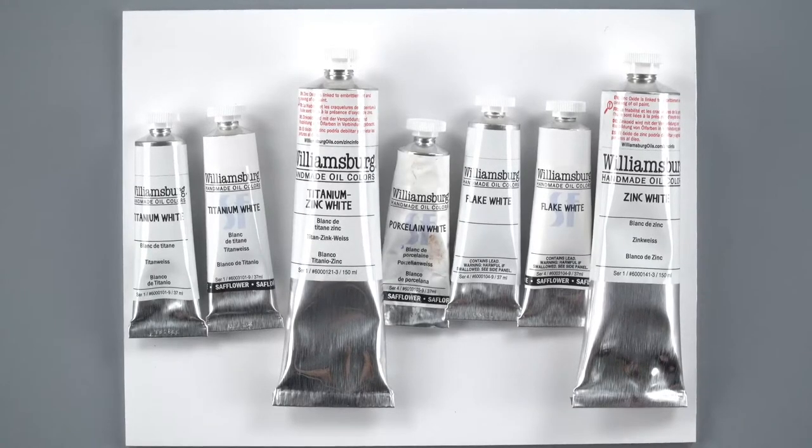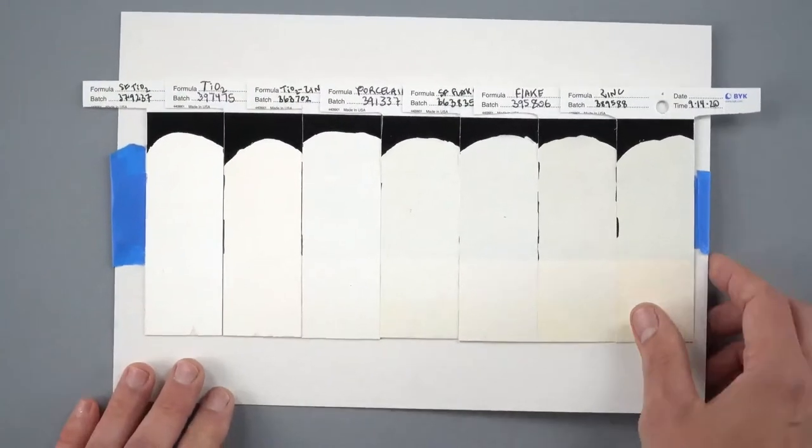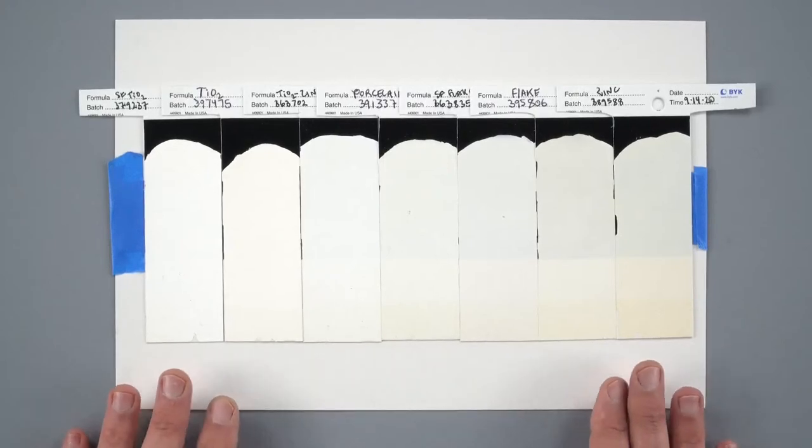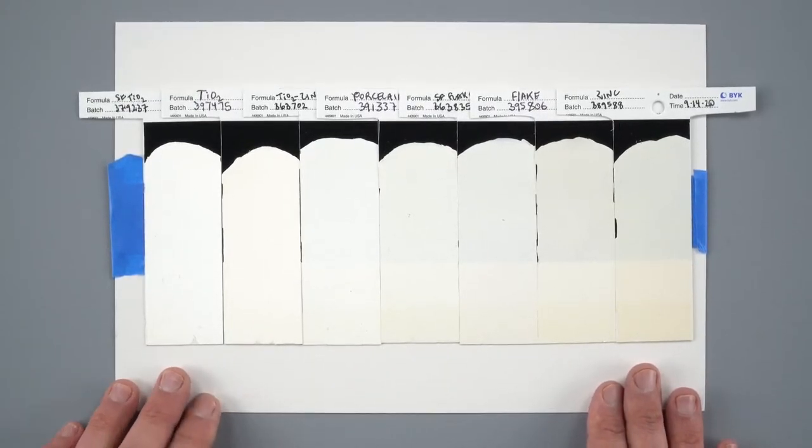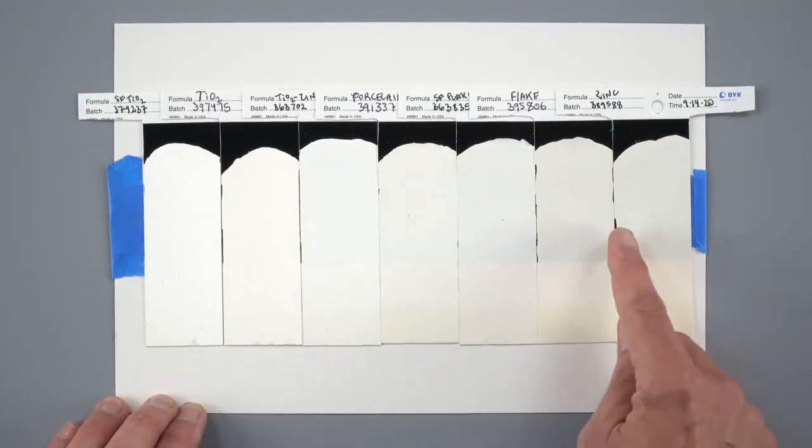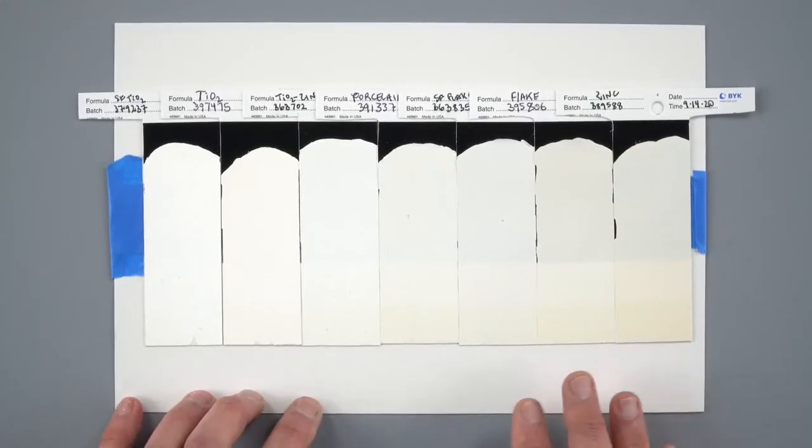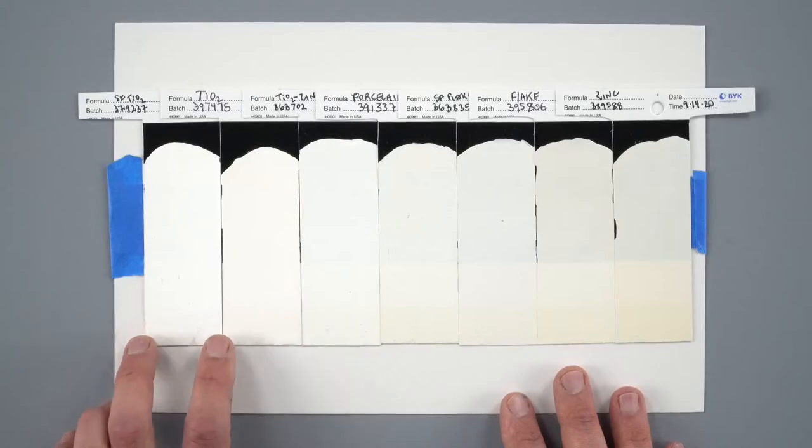Okay, so first thing I think we'll do is we will look at a card that is from an article that we recently wrote describing the subtle differences between Williamsburg whites. These are drawdowns, they are six mil, it's about the thickness of two pieces of office paper drawn down in uniform thickness over a card that is black and white. You can see that black ends there and then the white section of the card starts here.